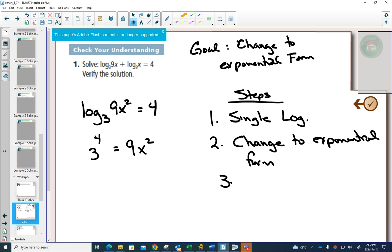Step 3. You just have to now solve for x. Now, 3 to the 4 is 81. Divide both sides by 9. Square root both sides. And you get x equals plus or minus 3.